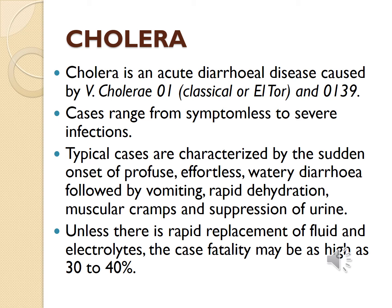The majority of infections are mild or asymptomatic. The typical cases of cholera are characterized by sudden onset of profuse, effortless watery diarrhea followed by vomiting, rapid dehydration, muscular cramps, and suppression of urine. In cholera, dehydration is very marked, and unless there is rapid replacement of fluid and electrolytes, the case fatality may be as high as 30 to 40 percent.